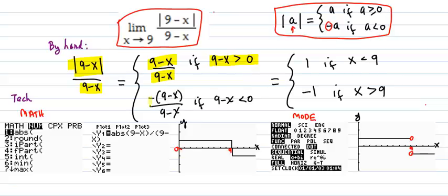And then the function will be negative 9 minus x over 9 minus x if the 9 minus x is less than 0, following our definition of absolute value of a. So then that works out to, it'll be equal to 1 if x is less than 9. If you work out this inequality, you get x is less than 9. And it'll be equal to negative 1 if x is greater than 9.